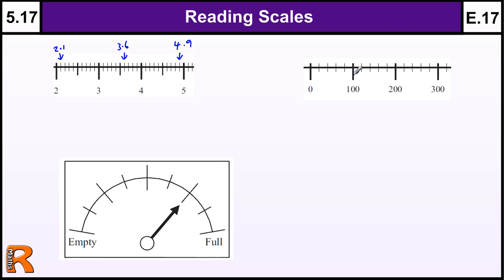So it has to be twice as big to get to 100, so these need to be 20. That's going to be 20, 40, 60, 80, 100. And once you know that, once you know how big the gaps are, the rest of it's fairly straightforward. So this one here is 120, 140, 160, and so on.